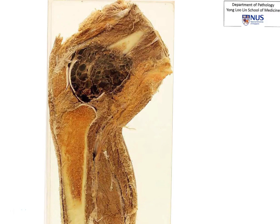Here is a longitudinally sectioned specimen of the lower limb. Just to orientate ourselves, we see that this bone is the distal femur. This would be the articular surface. This is the patella, and this is the proximal tibia. This is the epiphyseal region, the metaphyseal region here, and this would be the diaphysis. Surrounding it, we can see the soft tissue of the lower limb, including some skeletal muscle on either side of the bone, and then some subcutaneous tissue.